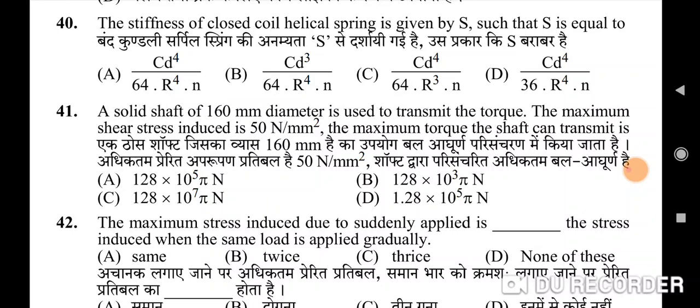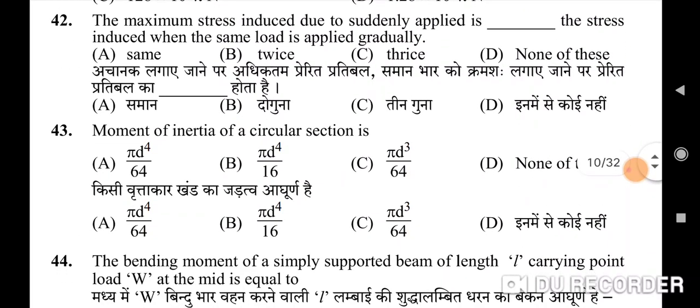Forty-second question: the maximum stress induced due to a suddenly applied load is — correct option is B: twice the stress induced when the same load is applied gradually. Forty-third question: the moment of inertia of a circular section — correct option is A: πd⁴/64.